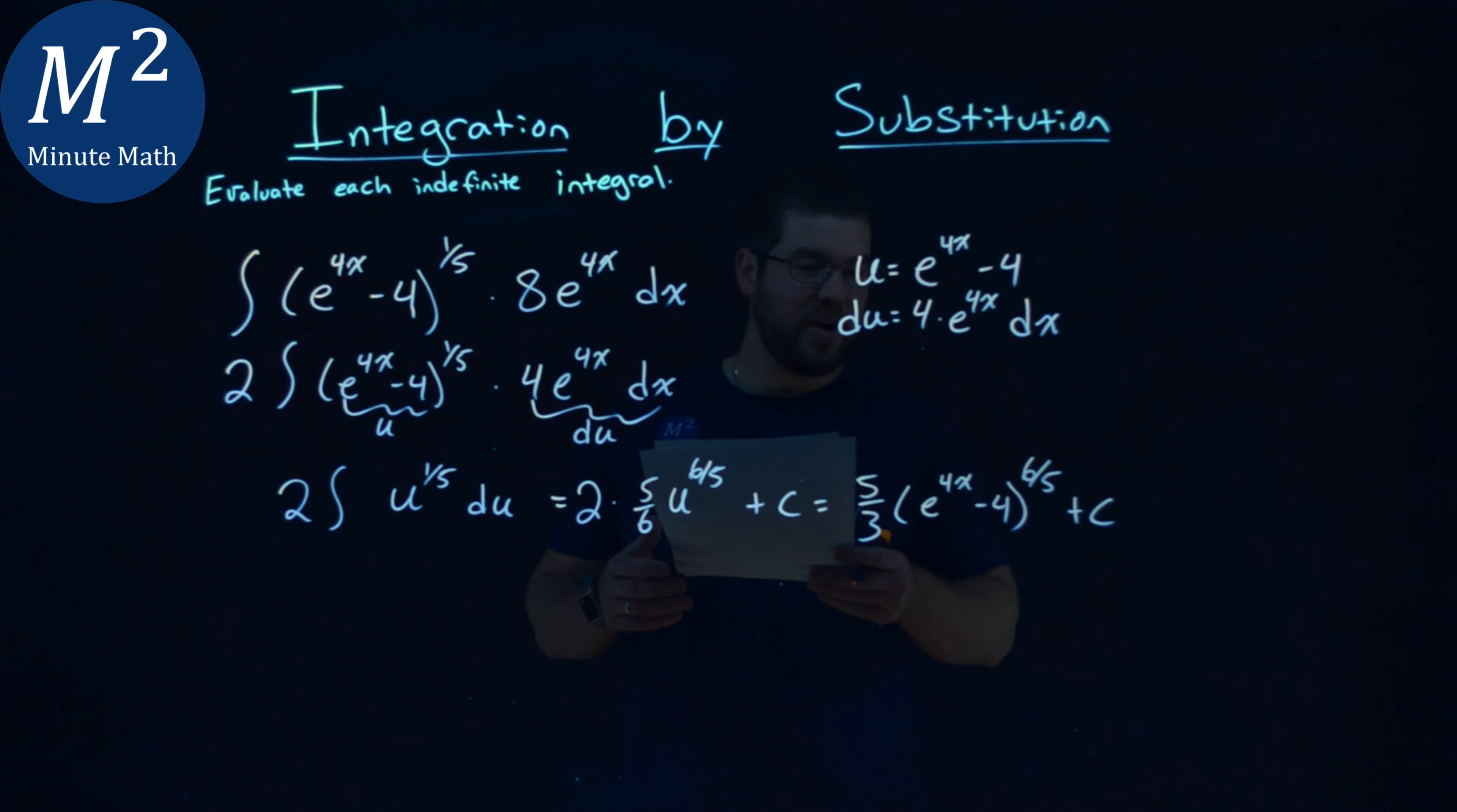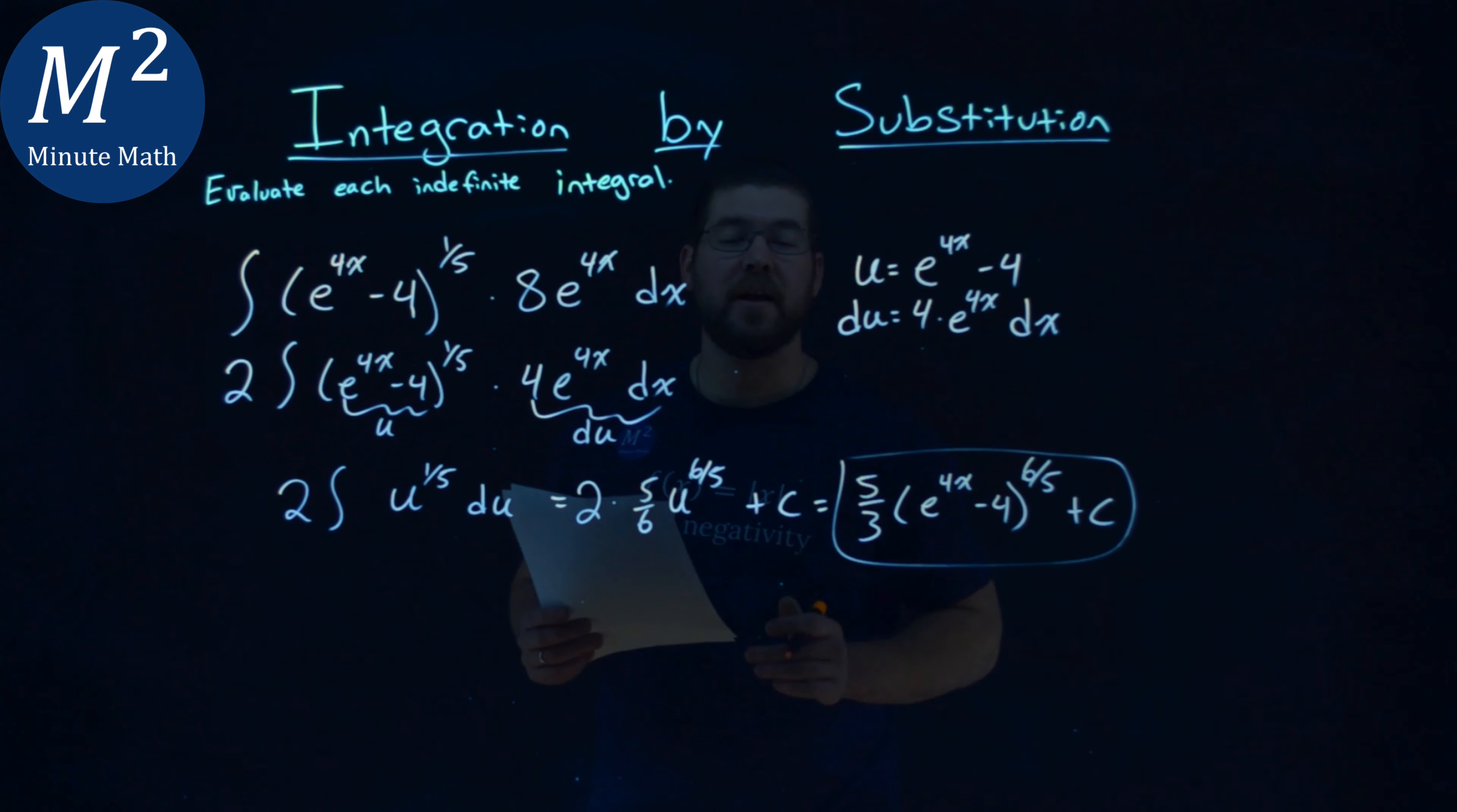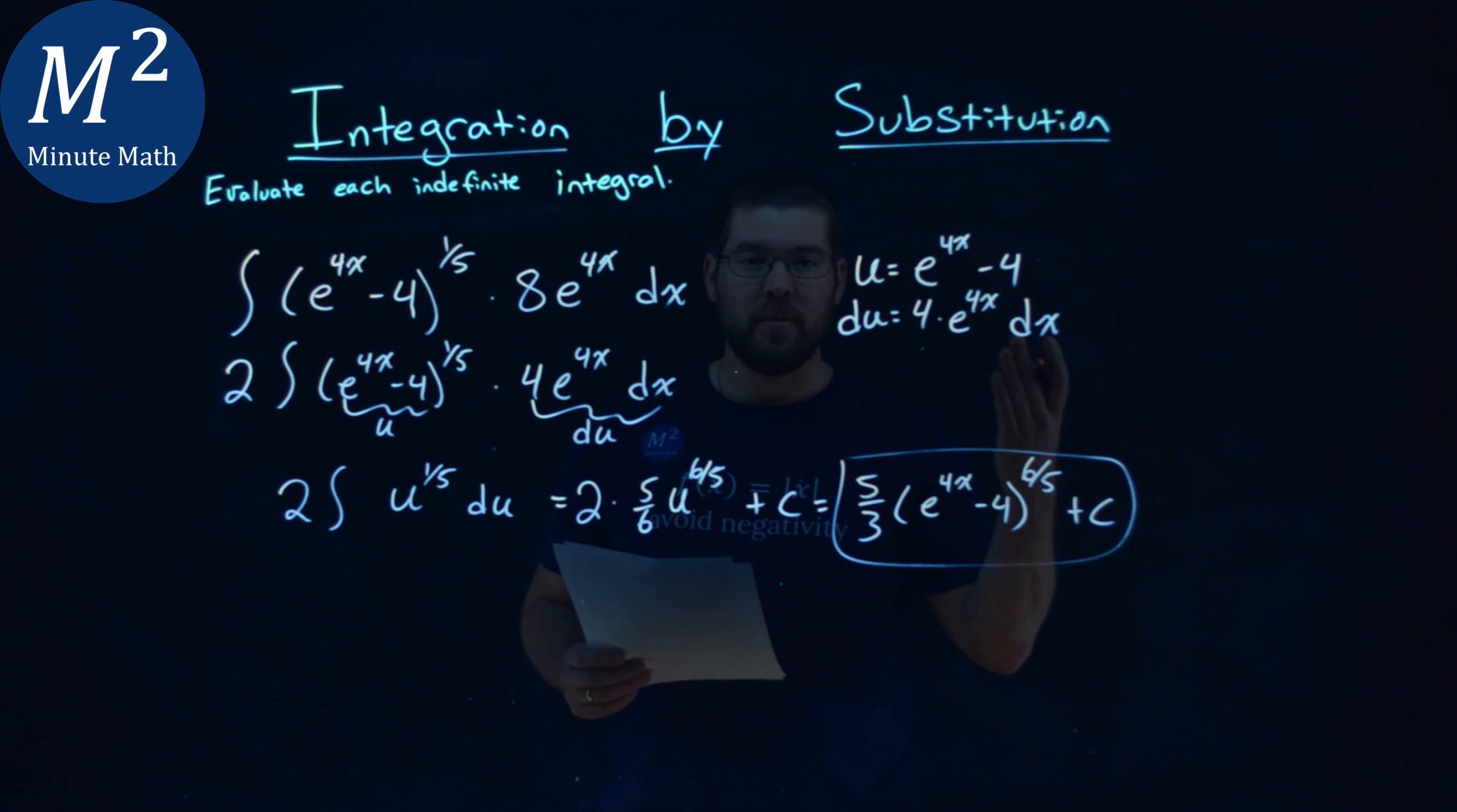And in my book, we are done. And so my final answer here is 5/3rds times e to the 4x minus 4 to the 6/5th power plus c.